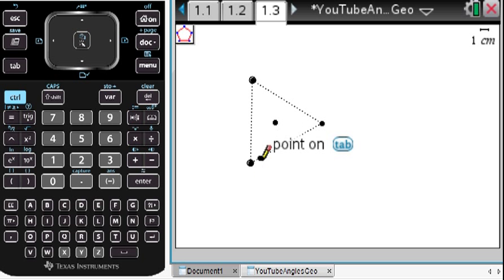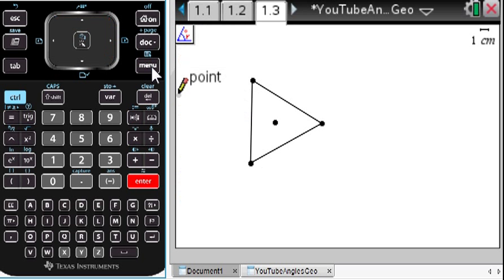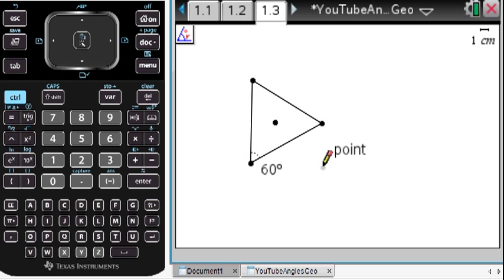I want to make a triangle where each of the sides are 60 degrees. Sweet, boom, there it is. How do I know it's 60 degrees? Menu, let's measure the angle. If I go click, click, and click, then there's the angle of 60 degrees.